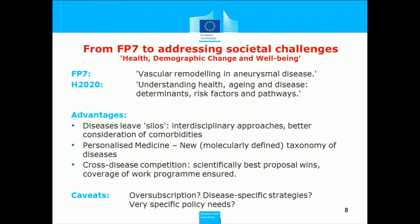For the health challenge, under FP7 we had a focus on specific diseases. We didn't always receive proposals for the diseases we wanted, or not good enough proposals. Under Horizon 2020 we are really looking at the bigger picture — understanding health, ageing, etc. — which means we have proposals coming in competing across a range of diseases and we pick the ones with the best impacts and best potential. It doesn't come without a downside: we have substantial over-subscription, and in many calls we are only able to fund proposals with a score of 15, which is very disappointing for the scientific community. We also sometimes struggle to address specific policy or research needs for certain diseases.